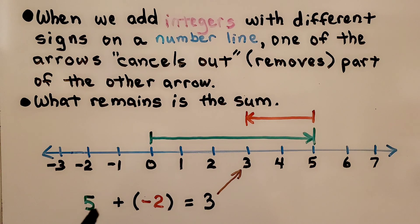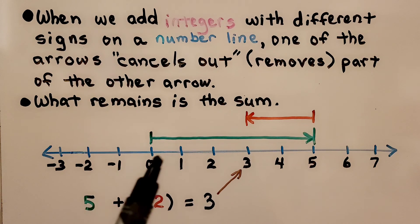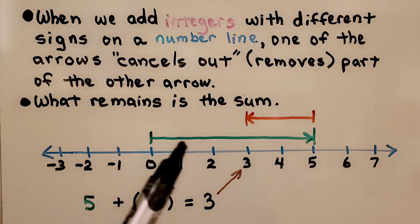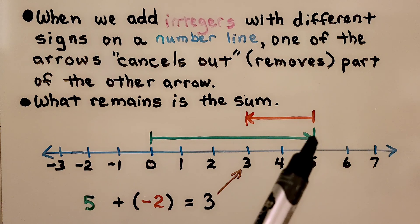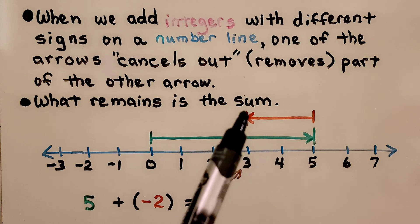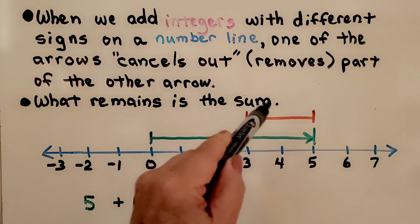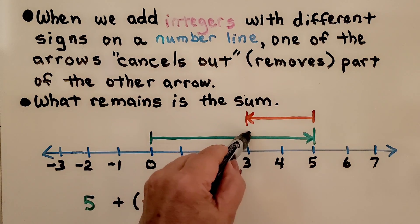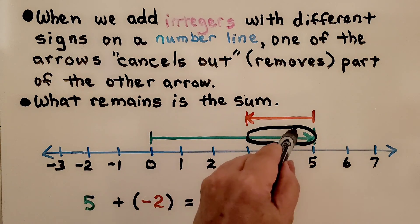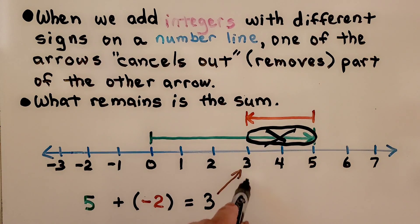We have positive 5 plus negative 2. We start at 0 and draw our arrow for positive 5. Then, because we're adding a negative 2, we come back towards the left 2 units. This arrow is canceling out part of the green arrow, bringing us back to a positive 3.